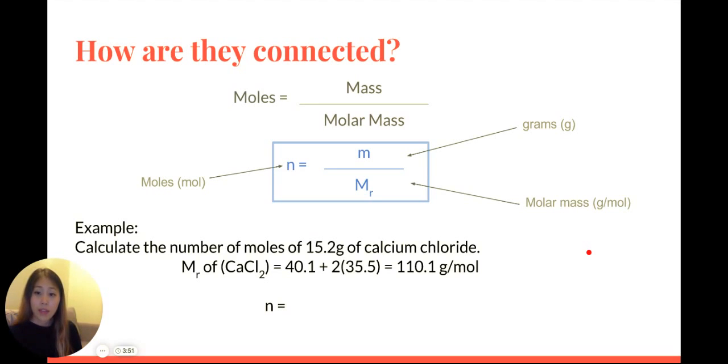The molar mass, if you look at the periodic table, you will find calcium has a molar mass of 40.1, and chlorine, chloride ions here, have 35.5 grams per mole. You have two chlorines, so you multiply by two.